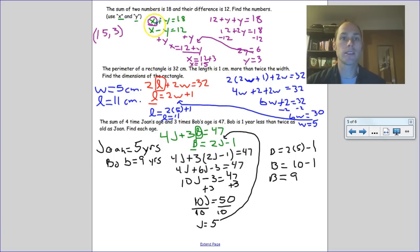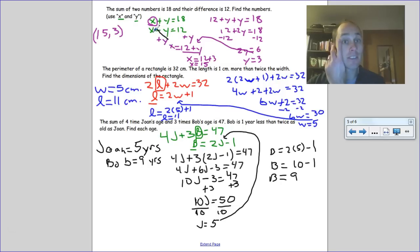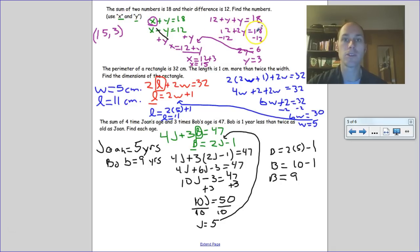For the first word problem, I solved the bottom equation for x by adding y to both sides: x equals 12 plus y. Substituting into the top equation: 12 plus y plus y equals 18, giving 2y equals 6, so y equals 3. Plugging back in: x equals 12 plus 3 equals 15. The two numbers are 15 and 3: 15 plus 3 is 18, 15 minus 3 is 12.